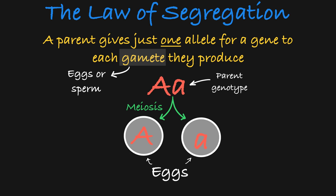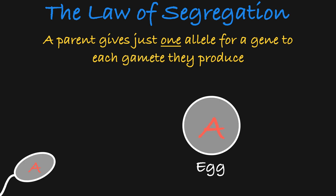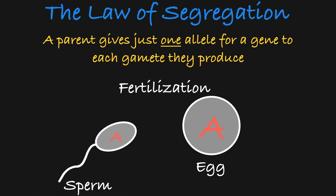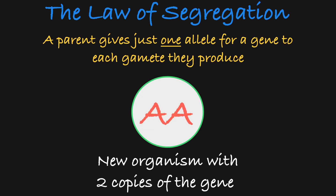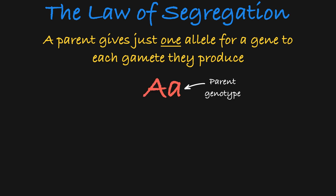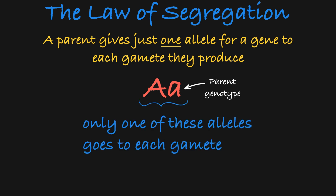Therefore, if you are a heterozygote, then you can either give this allele or this allele to your offspring. You do not give both to a single gamete. When fertilization occurs, two gametes fuse together, giving the organism created two copies of each gene to complete their genome. So the law of segregation simply means that a parent gives just one of its alleles for a gene to its offspring.